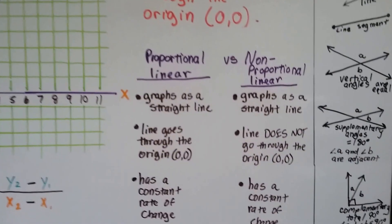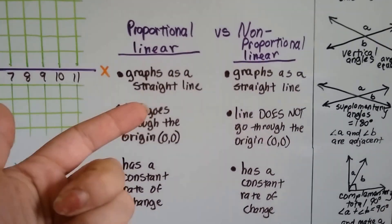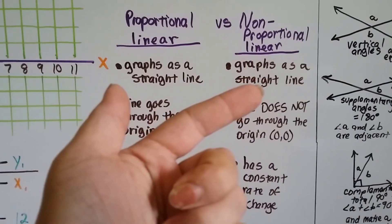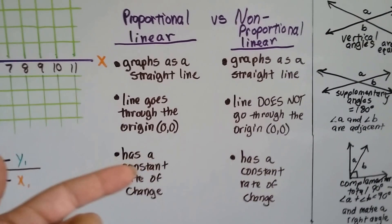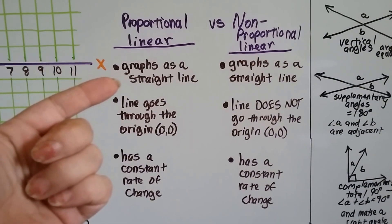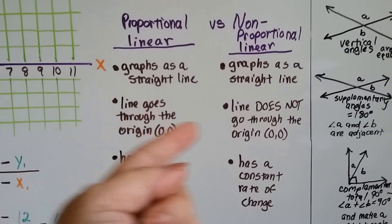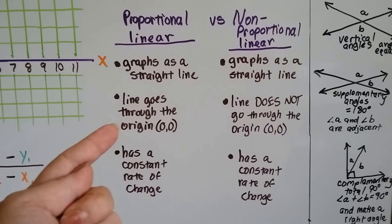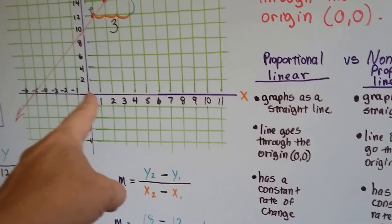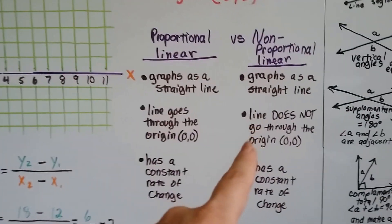So let's look at the difference here. In the last unit, we did proportional linear, and now we're doing non-proportional linear. What's alike or different? Well, the proportional linear graphs as a straight line. So does the non-proportional. It made a straight line. The proportional went through 0, 0, the origin, right here when we drew our line.